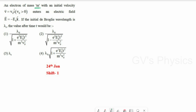Next question: an electron of mass M with initial velocity V = V₀ î enters an electric field E = −E₀ k̂. If the initial de Broglie wavelength is λ₀, find the value after time t. They asked for de Broglie wavelength, so we take the equation λ = h/p, and since they ask in terms of velocity, we expand momentum as mass times velocity.